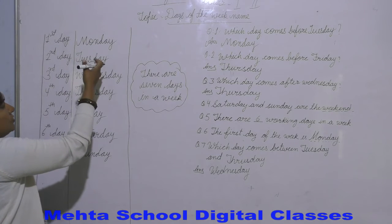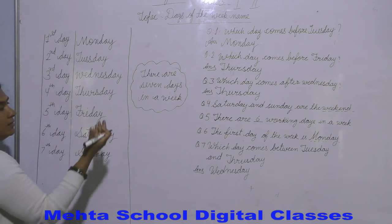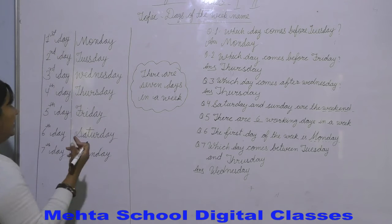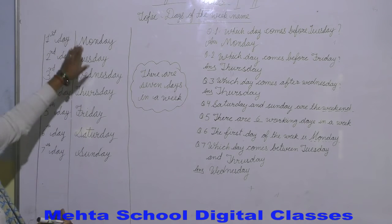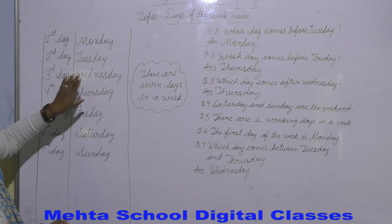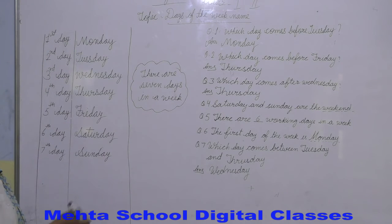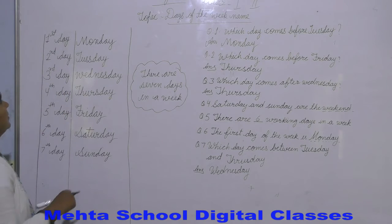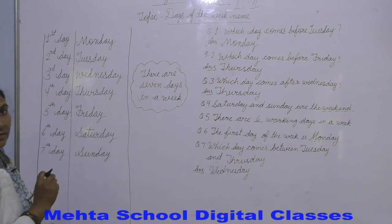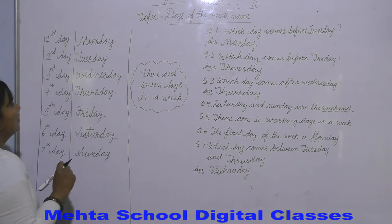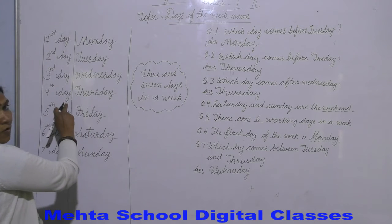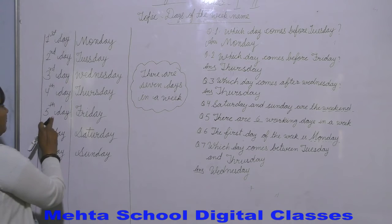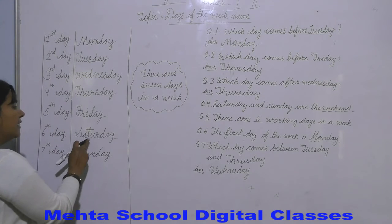Koan koan se? Monday, Tuesday, Wednesday, Thursday, Friday, Saturday, Sunday. Monday week ka first day, Tuesday second day, Wednesday third day, Thursday fourth day, Friday fifth day, Saturday sixth day.